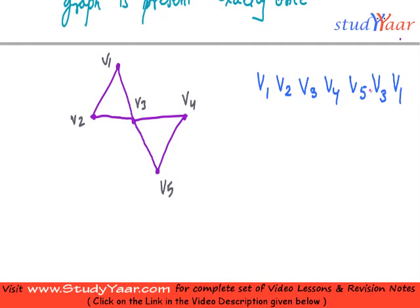Let us check out if this circuit is Eulerian. Basically, I should have every edge present in this path and every edge should be present only once. So I am going like this, then I am going like this, then...